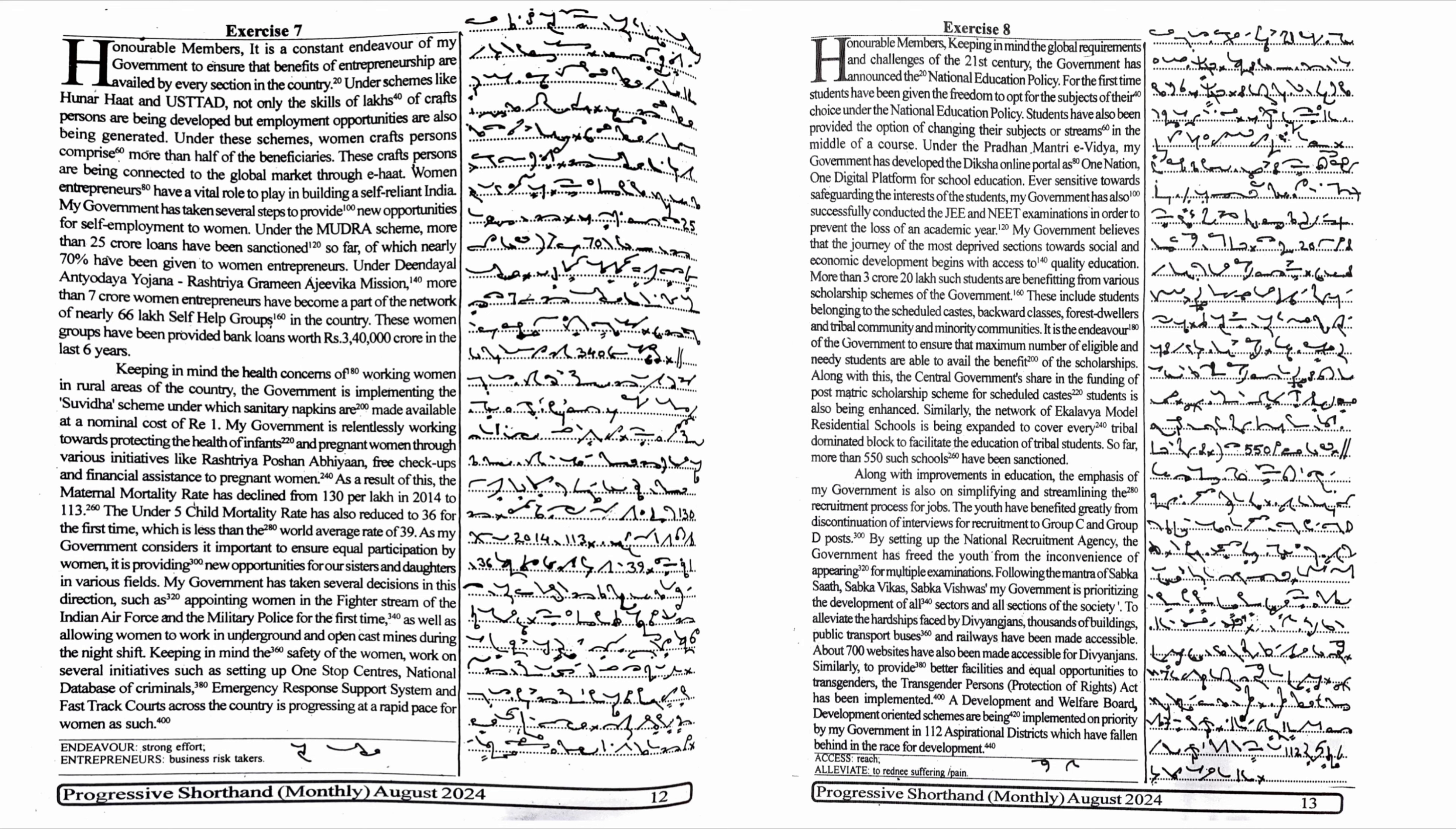Under Deen Dayal Antyodaya Yojana, Rashtriya Grameen Ajivika Mission, more than 7 crore women entrepreneurs have become a part of the network of nearly 66 lakh self-help groups in the country. These women groups have been provided bank loans worth Rs. 3,40,000 crore in the last 6 years.